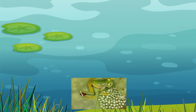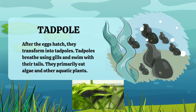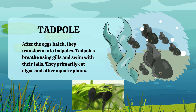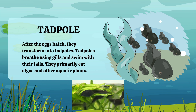After the eggs hatch, they transform into tadpoles. At this stage, tadpoles breathe using gills and swim with their long tails. They primarily feed on algae and other aquatic plants, thriving in their watery environment.